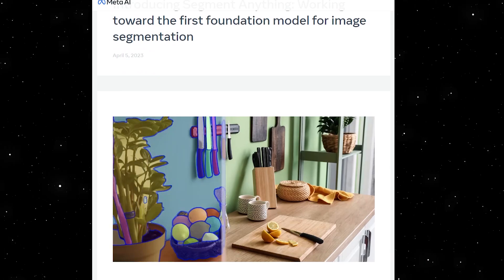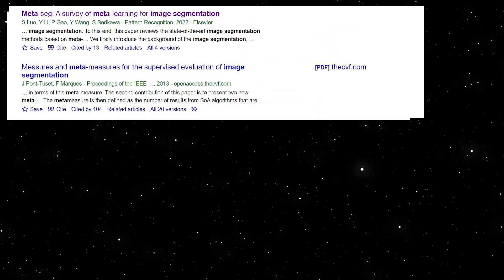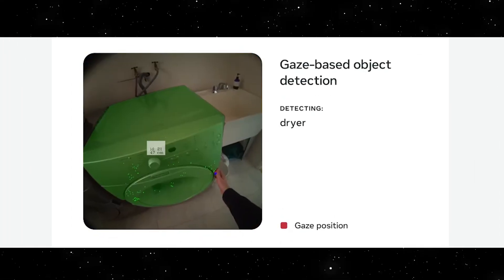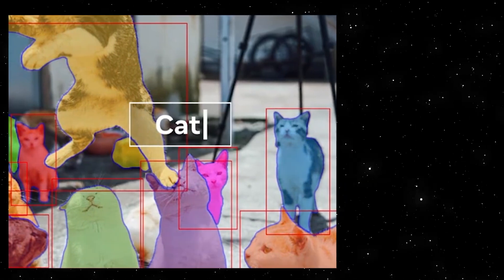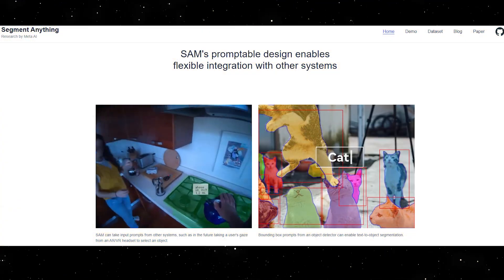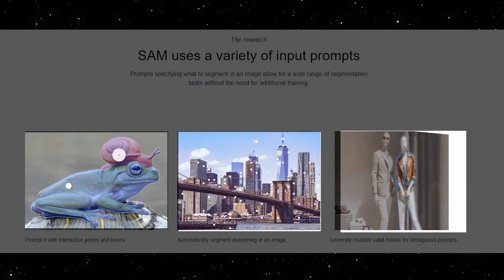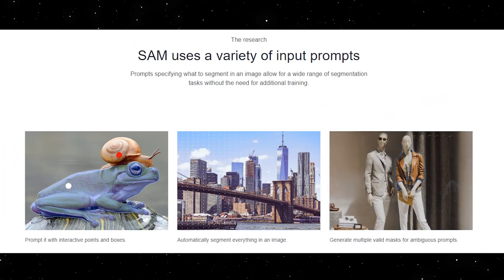The flexibility of SAM opens up possibilities for various applications, including AR/VR content creation, scientific research, and more general AI systems. In the AR/VR domain, SAM could enable selecting an object based on a user's gaze and then lifting it into 3D. In scientific studies, SAM could aid in localizing animals or objects in video footage for tracking and analysis. Taking inspiration from foundation models in natural language processing and computer vision, SAM is designed to return a valid segmentation mask for any prompt — which can be foreground/background points, a rough box or mask, free-form text, or any information indicating what to segment in an image. This task is used to pre-train the model and to solve general downstream segmentation tasks via prompting.